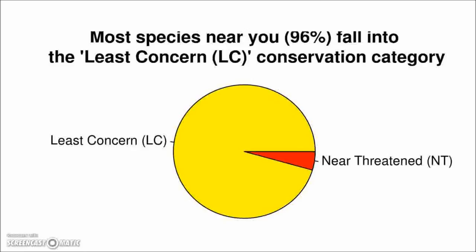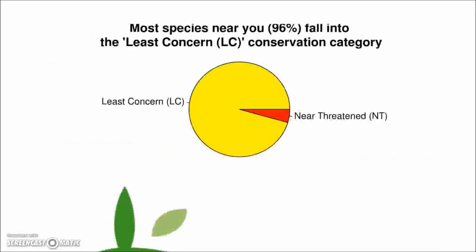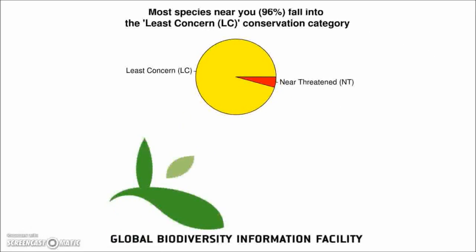This is what I really like: we use the IUCN threat criteria of all the species found and put them into a pie chart. We get to see, of the species around us where I am right now, how many fall into each threat category. Here I find out that most of the species are doing okay — 96% of them fall into the least concerned category. And then of course, the all-important GBIF logo. So that's what hashtag #mygbif does right now.